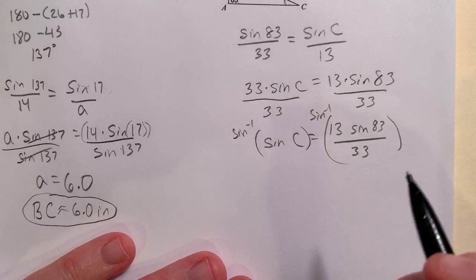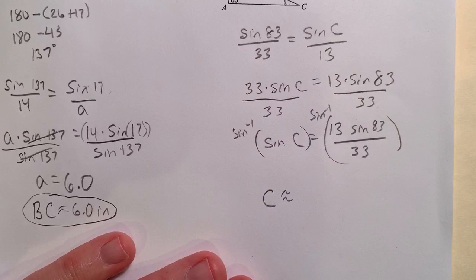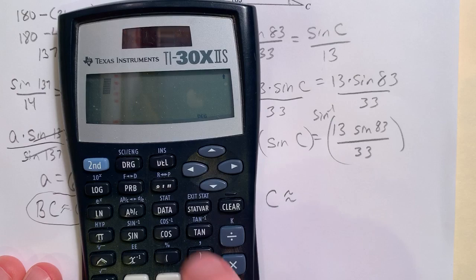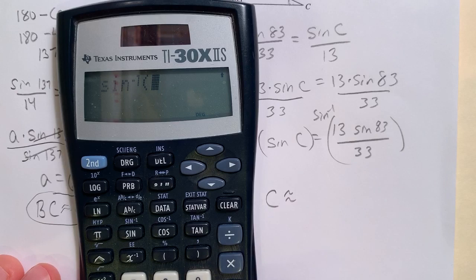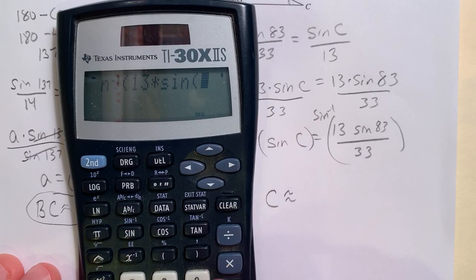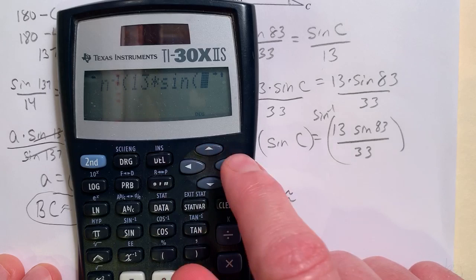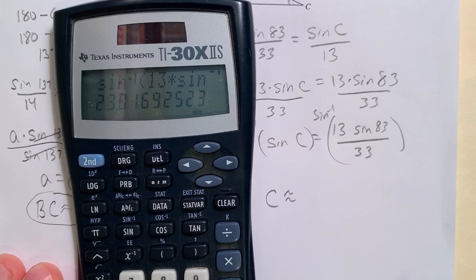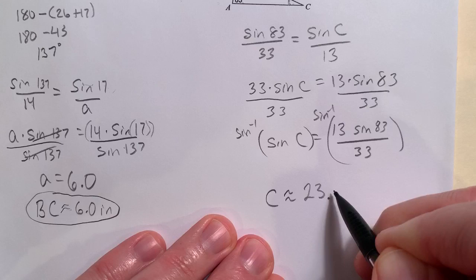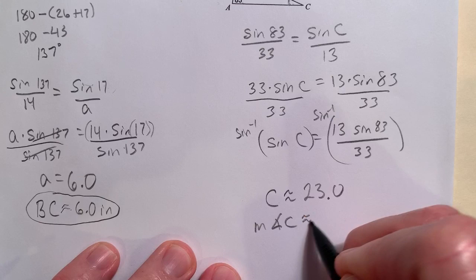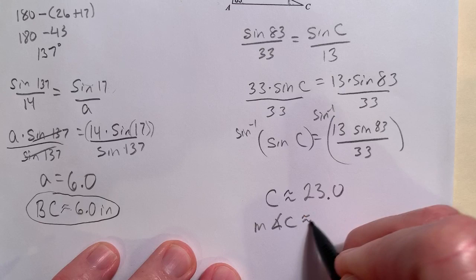So now the rest of it's just plugging into a calculator, but this is going to cancel with this. That gives me C is about equal to. I'm going to do sine inverse. And then we're looking at 13 times sine of 83 in parentheses. And we're going to divide that by 33. And that gives me right at 23.0. So the measure of angle C is about 23.0 degrees. Make sure to label it. And that's how we use Law of Sines.